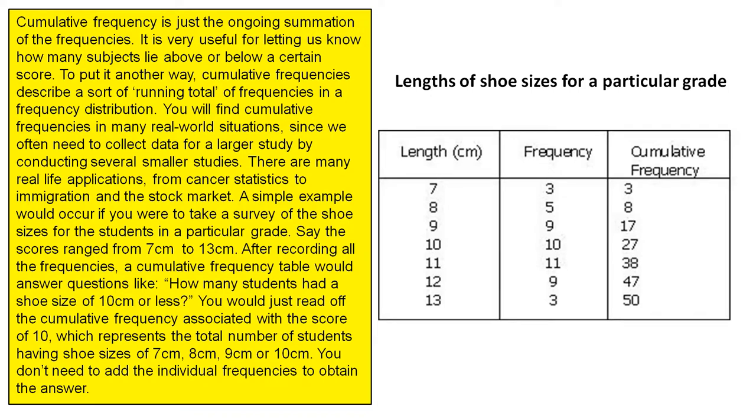You would just read off the cumulative frequency associated with the score of 10, which represents the total number of students having shoe sizes of 7cm, 8cm, 9cm or 10cm. You don't need to add the individual frequencies to obtain the answer.